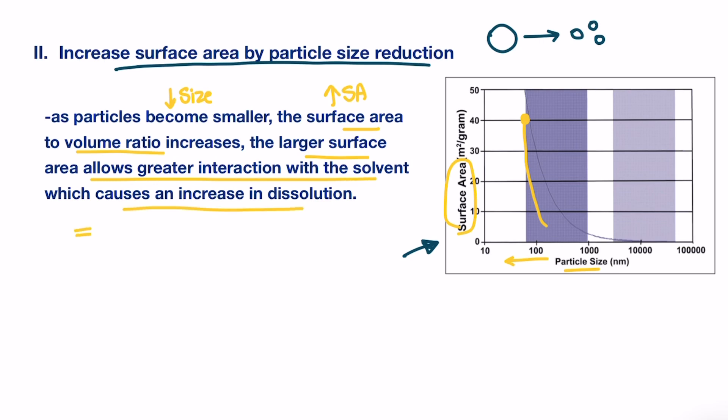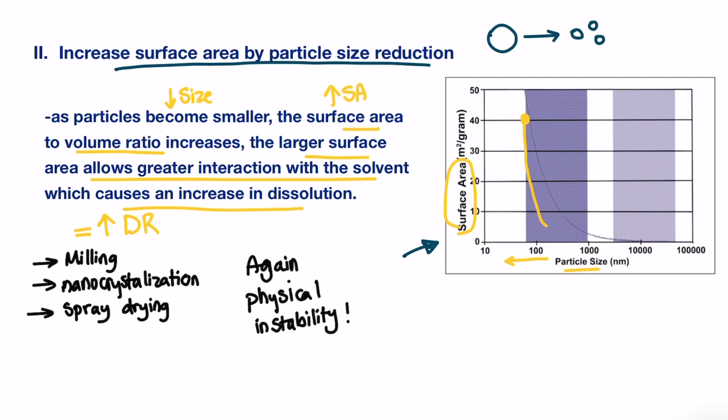There are many techniques used to reduce drug particle size, such as milling, nanocrystallization, and spray drying. However, again, some problems with physical stability. Because the small particles with time will go back or aggregate together to form bigger particle that has low surface area. One main point needs to be highlighted here is that this method affects the dissolution rate without altering the intrinsic solubility of the drug, unlike the previous ones.